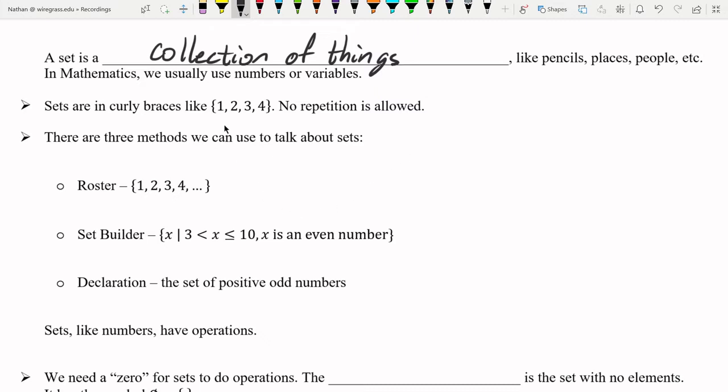Sets are going to be written in these curly braces and no repetition is allowed. So if this set says 1, 2, 3, 4, I cannot write a set like this: 1, 2, 2, 3, 4, 4, 4.